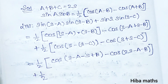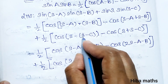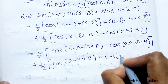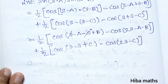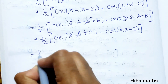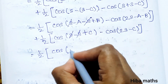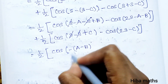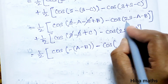For the second term, plus 1/2 cos[(s) minus (s-c)] minus cos[2s minus c]. Simplifying: the minus signs cancel inside the brackets. Since cosine is an even function, cos(minus theta) equals cos(theta), so we can remove the negative sign.